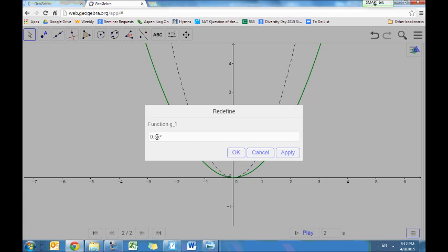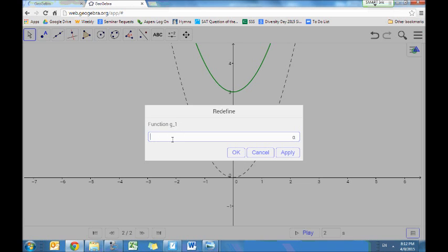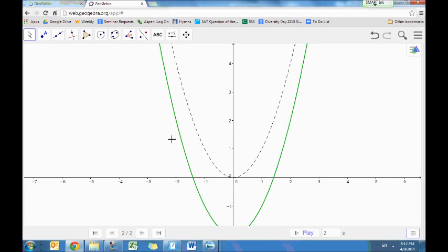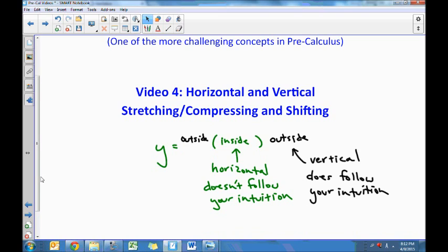A similar thing will happen if I'm shifting it, meaning I'm doing plus 3. It'll be shifted up 3. If I do x squared minus 2, it'll go down 2. So things outside of the parentheses, outside the parentheses, it's something that's vertical and it follows your intuition.